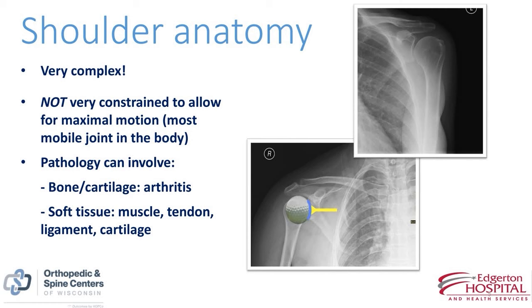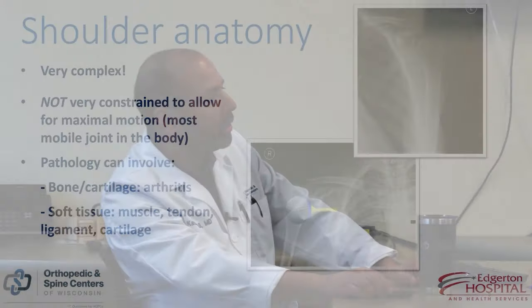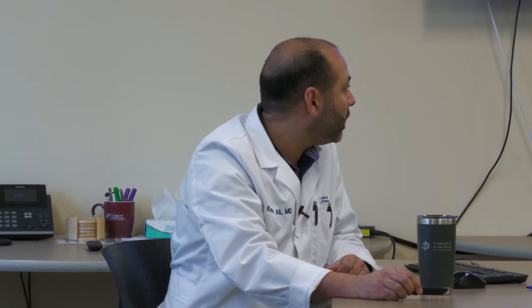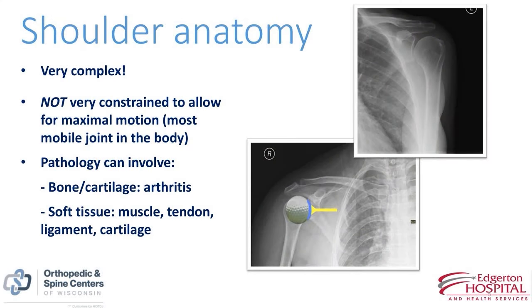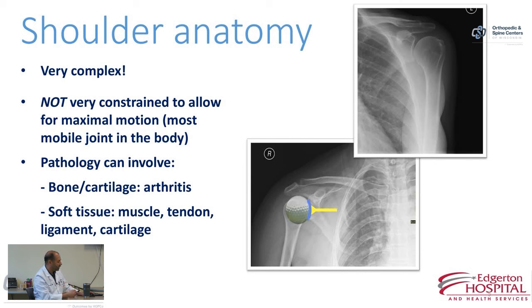Problems with the shoulder fall into two broad categories. One is bone and cartilage — that would be arthritis or a fracture, which can cause pain and difficulty with range of motion. The other category is soft tissue issues. To stabilize that ball on its shallow socket, there's a lot of soft tissue surrounding it: muscles, tendons — which attach muscles to bone — ligaments that connect bone to bone, and cartilage that coats the joint surface and allows frictionless movement. All that soft tissue needs to work together for the shoulder to function appropriately.